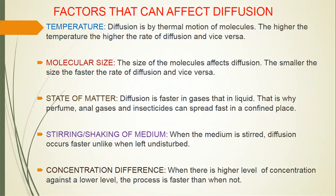Number two: molecular size. The size of the molecules affects diffusion. The smaller the size, the faster the rate of diffusion, and the bigger the size, the slower the rate of diffusion. Number three: state of matter. Diffusion is faster in gases than in liquids. That is why perfumes and insecticides can spread faster in confined places.